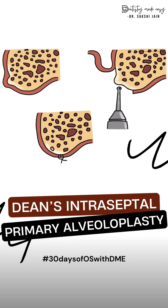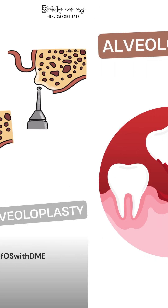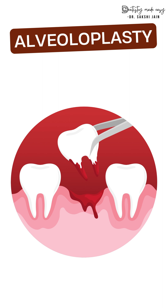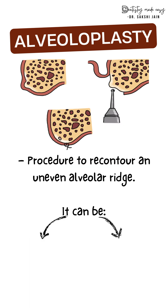Starting with the next topic: Dean's Intraceptal Alveoloplasty from pre-prosthetic surgery. After tooth extraction, areas of bone are sharp and uneven, causing irritation, pain, discomfort, and instability of the denture. Hence alveoloplasty is the best option as it reshapes and recontours the alveolar ridge. It is of two types: primary alveoloplasty or secondary alveoloplasty.